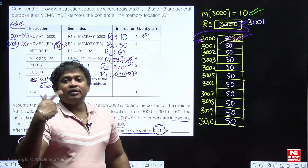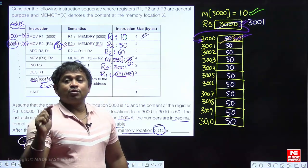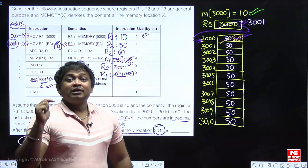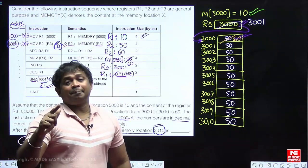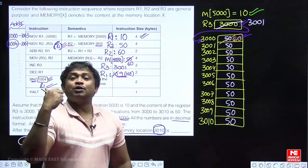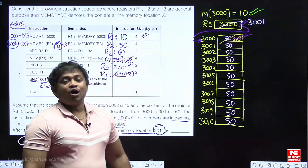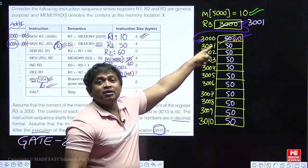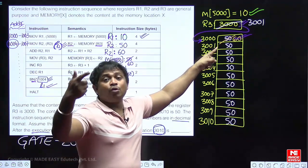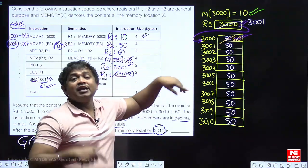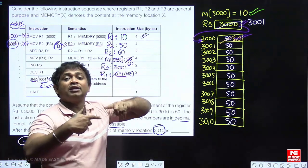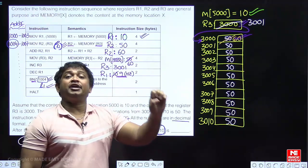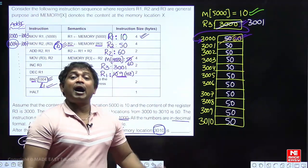The loop runs 9 more times, meaning a total of 10 memory locations are updated starting from 3000. Memory locations 3000 to 3009 are all updated.